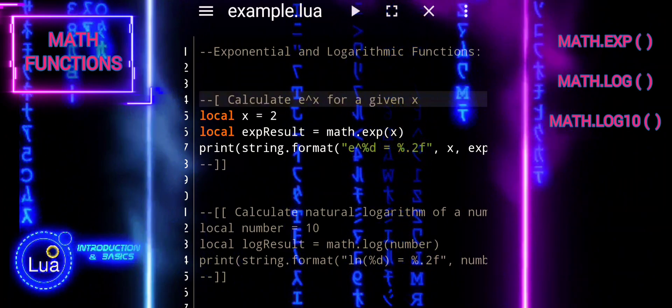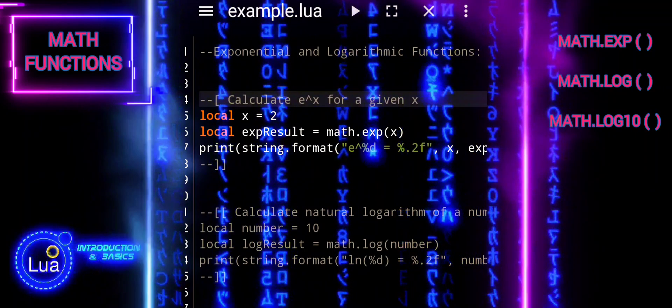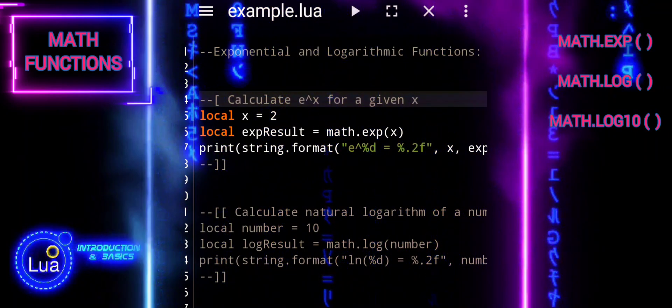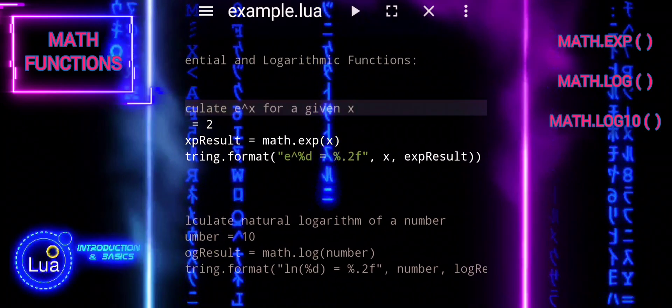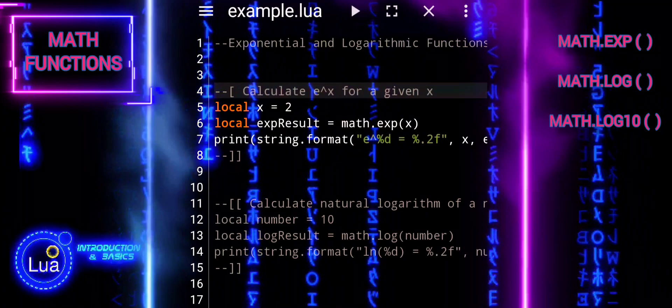The value of x and exp_result are passed to string.format as additional arguments. Overall, this code calculates and prints the value of e raised to the power of 2, demonstrating the usage of the math.exp function in Lua.